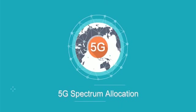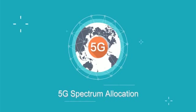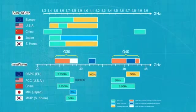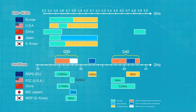Now let's take a look at how 5G spectrum is being allocated around the world, including the sub-6 GHz and millimetre wave bands, and which specific frequency bands are being allocated to 5G. In the illustration here, we can see how the two spectrums — sub-6 GHz and millimetre wave — are allocated.